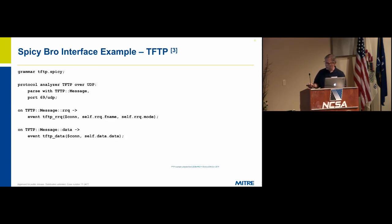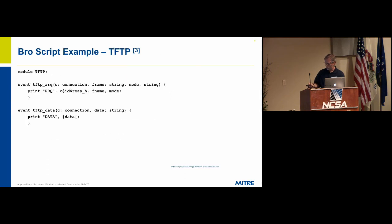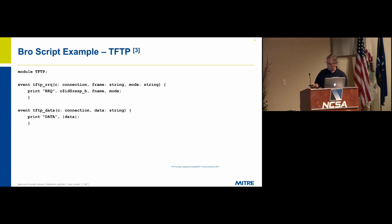To hook it into Bro, you have to create a little event file where you import this grammar. You specify that we're going to analyze TFTP over UDP with TFTP message, which is the prior page. When we have a TFTP read-request message, we define an event for Bro that provides the connection information, and the file name and mode which came out of that grammar.